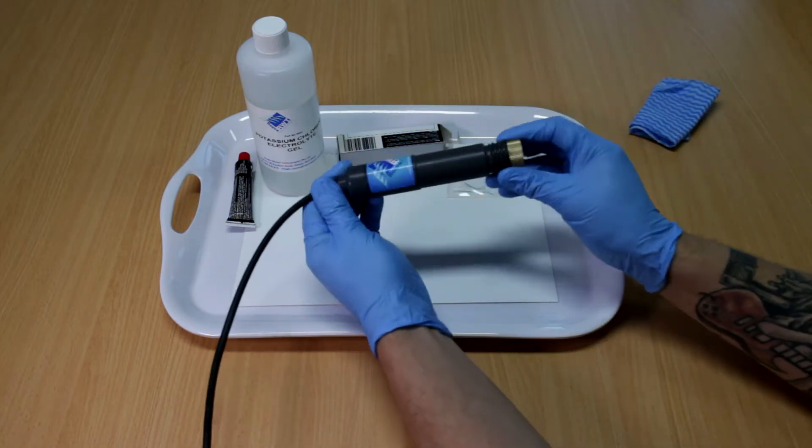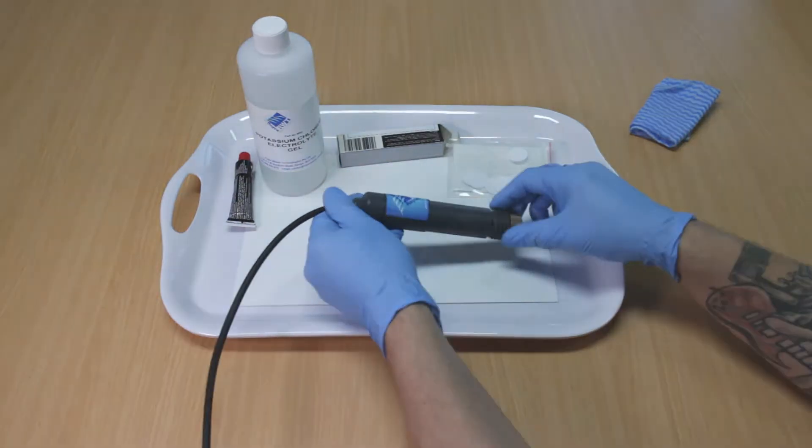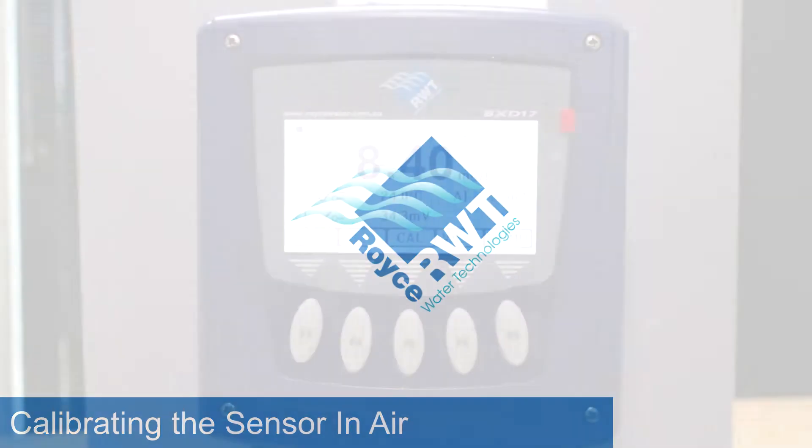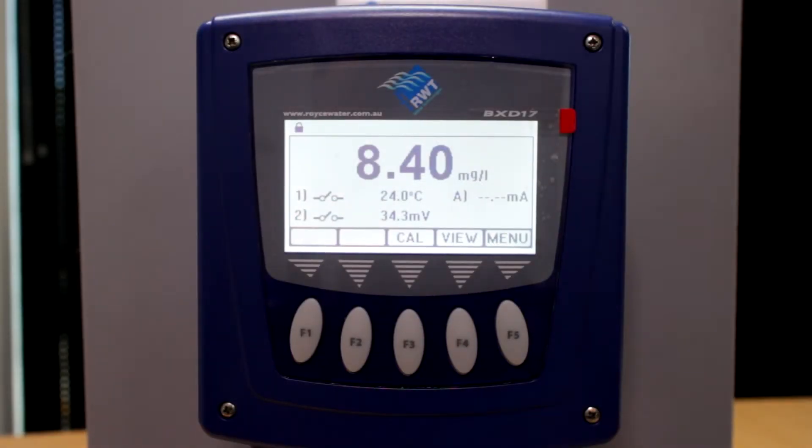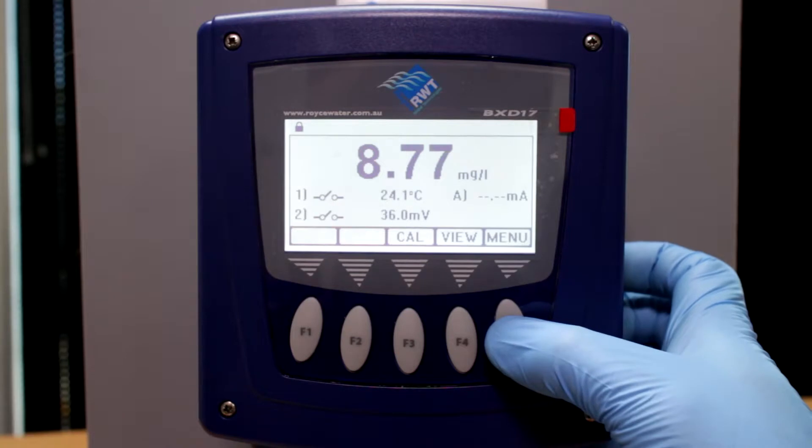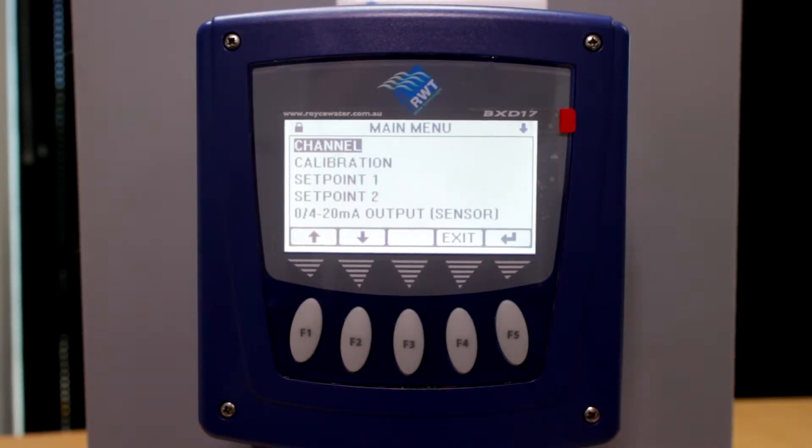To calibrate your newly charged Royce G95A dissolved oxygen sensor, first ensure that the probe is placed in free air and out of direct sunlight. Push F5 on the front screen - this will take you to the menu.